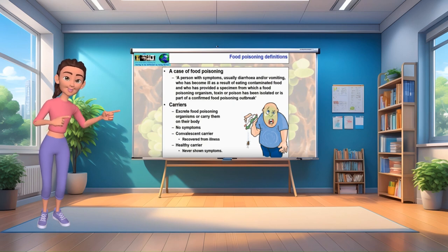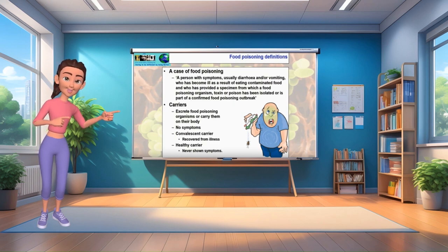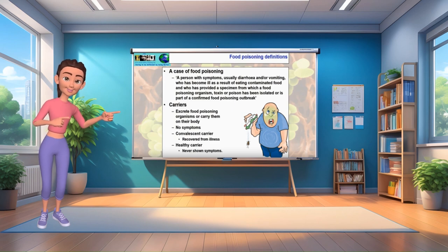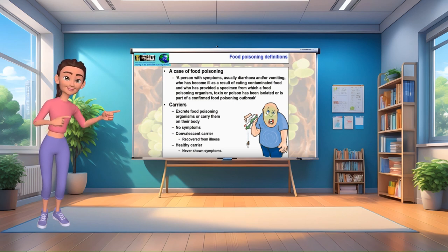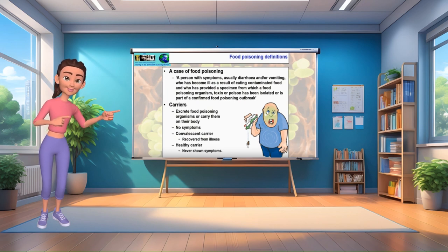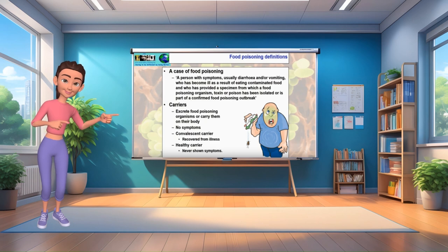Carriers excrete food poisoning organisms or carry them on their body, but don't have any symptoms. A convalescent carrier has recovered from the illness. A healthy carrier has never shown symptoms.